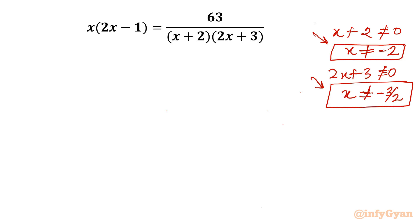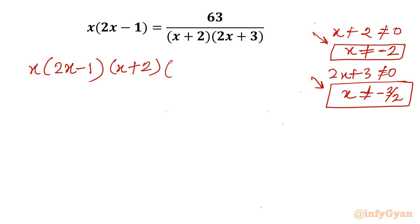Now since the denominator is non-zero, I can cross multiply. I will write x times (2x minus 1) times (x plus 2) times (2x plus 3) equal to 63.